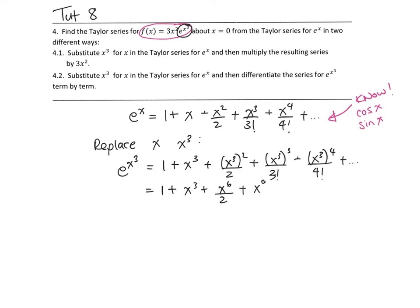Now the first way of getting our Taylor series for f(x) is to notice that what we want is 3x²·e^(x³). So we can multiply our Taylor series that we found by 3x². This is method 1.